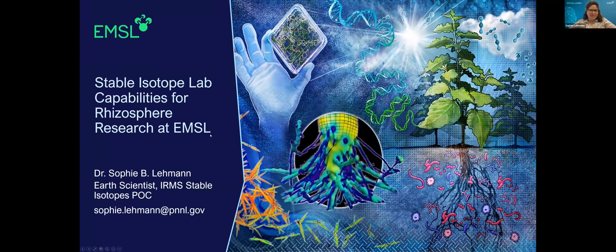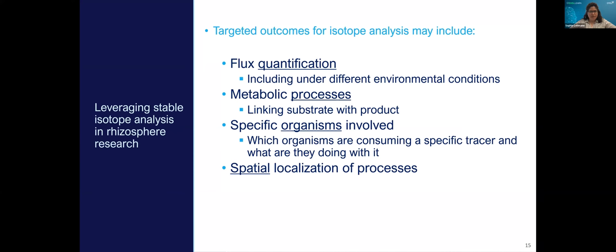Hi, everyone, thank you for coming today. I'm going to talk about some background on light stable isotopes, some of the capabilities we have in EMSL that you might be interested in applying to your work, and then some research broadly within the environmental sciences that applies stable isotopes that hopefully will inspire you in your rhizosphere work. Some types of questions that might be interesting are flux quantification, metabolic processes, what specific organisms are involved, what organisms are consuming a specific tracer and what they are doing with it, and spatial localization of processes.